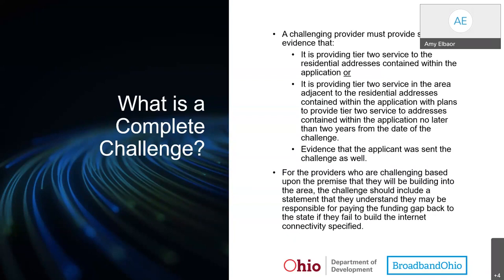The challenging provider must also submit evidence that the applicant was sent the challenge. For providers challenging based on the premise that they will be building into the area, the challenge should include a statement that they understand they may be responsible for paying the funding gap back to the state if they fail to build the Internet connectivity specified.